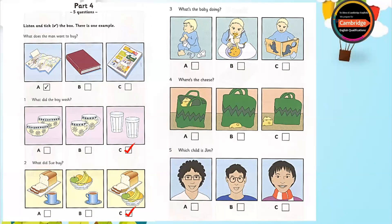3. What's the baby doing? Oh, it's good to be home. Oh, look at the baby. He's trying to take off his shoes. He doesn't like them. I know. And he's hungry. I must cook his supper. Can you read him a story? OK, Aunt Jane.